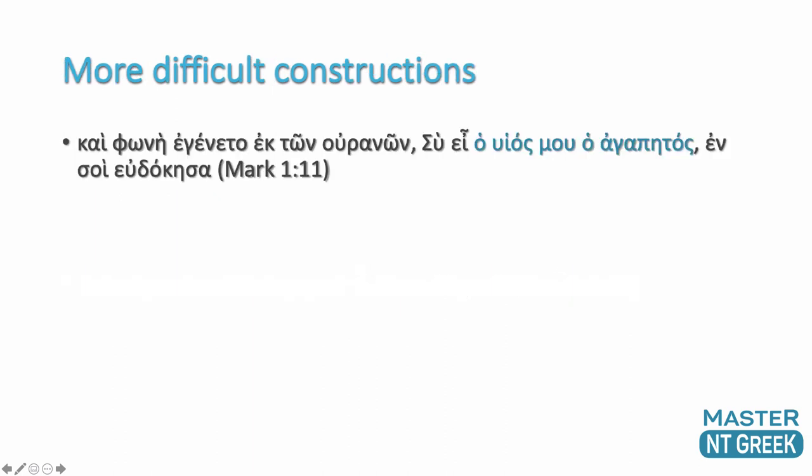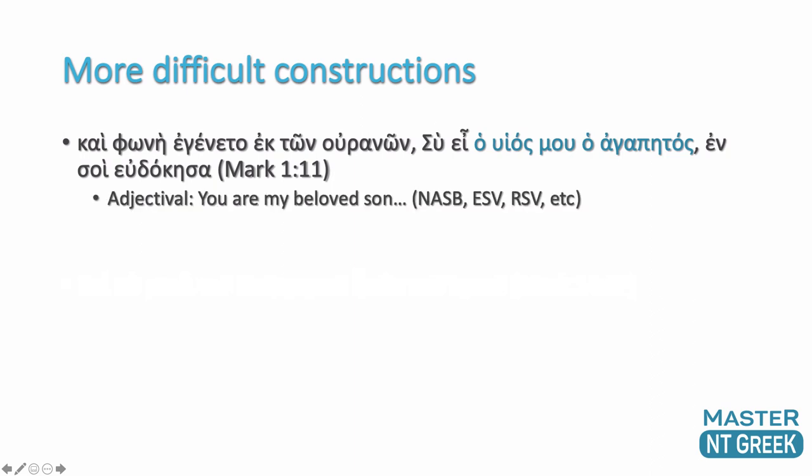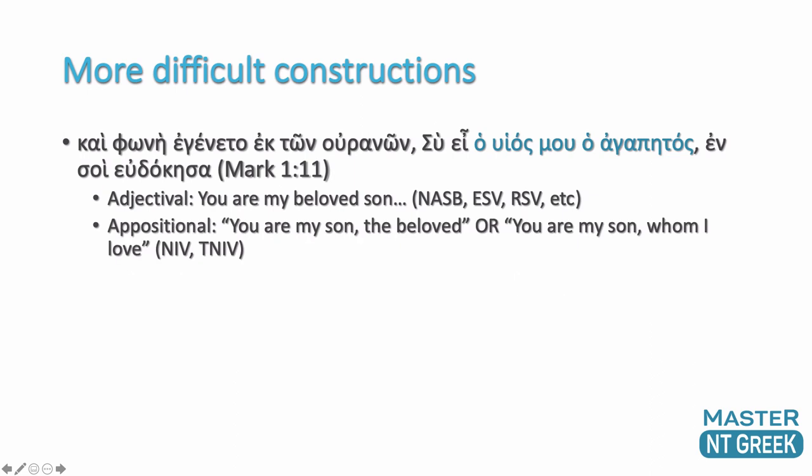Now let's talk about some more difficult constructions. In Mark 1:11, look at the highlighted portion: 'This is my son.' But then how do you take 'ho agapeitos' on the end? You've got two choices: 'You are my beloved son,' which takes it as an adjective — this is how the NASB, ESV, and RSV translate it — or do you regard this as an apposition: 'You are my son, the beloved,' or as the NIV puts it, 'You are my son, whom I love.' How do you decide between these two options, with major translations on both sides?